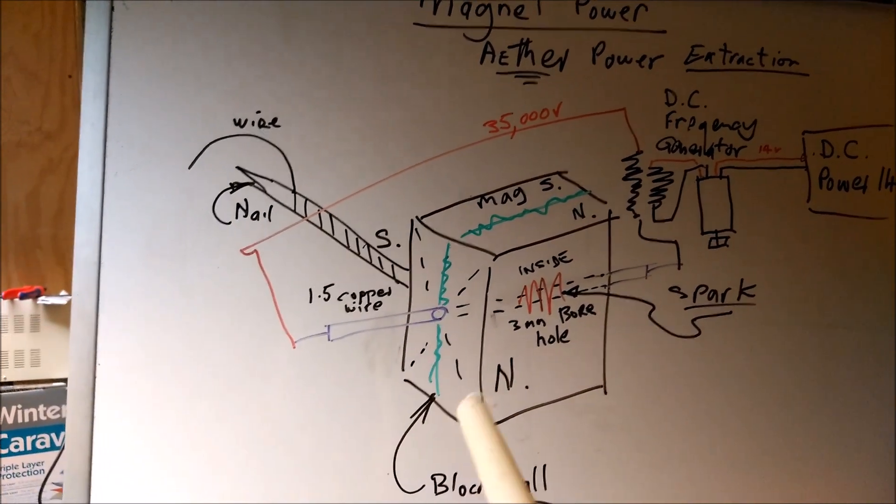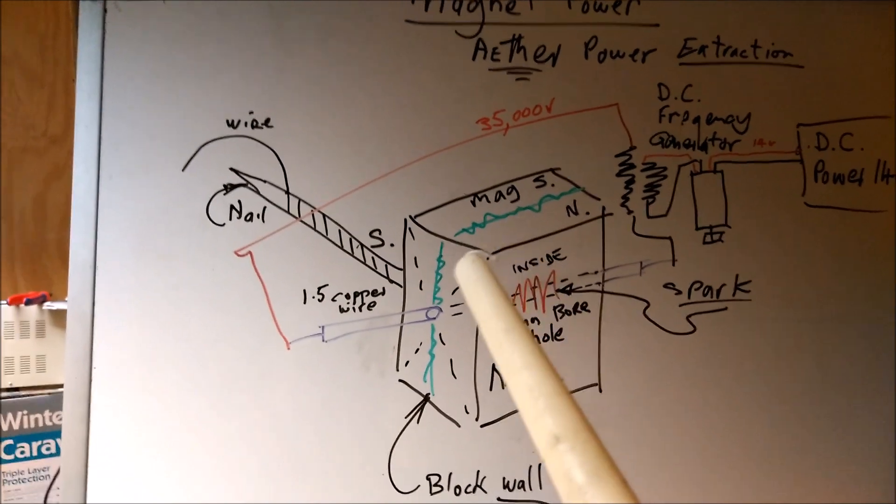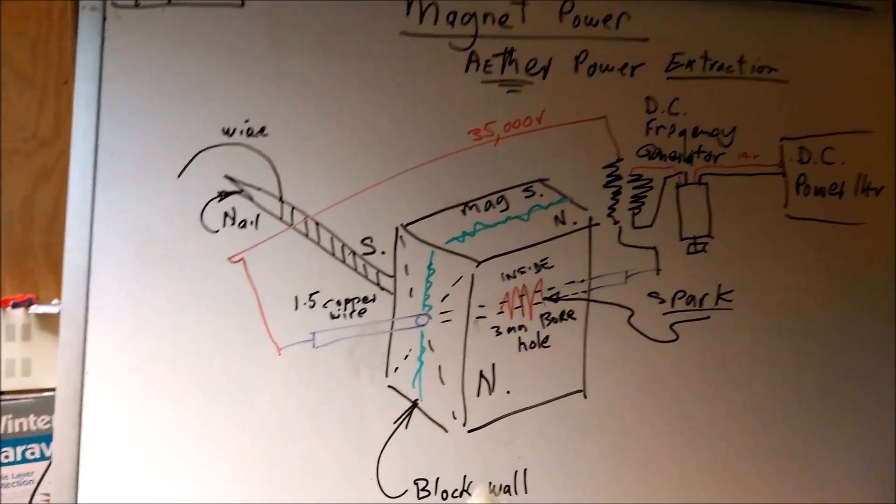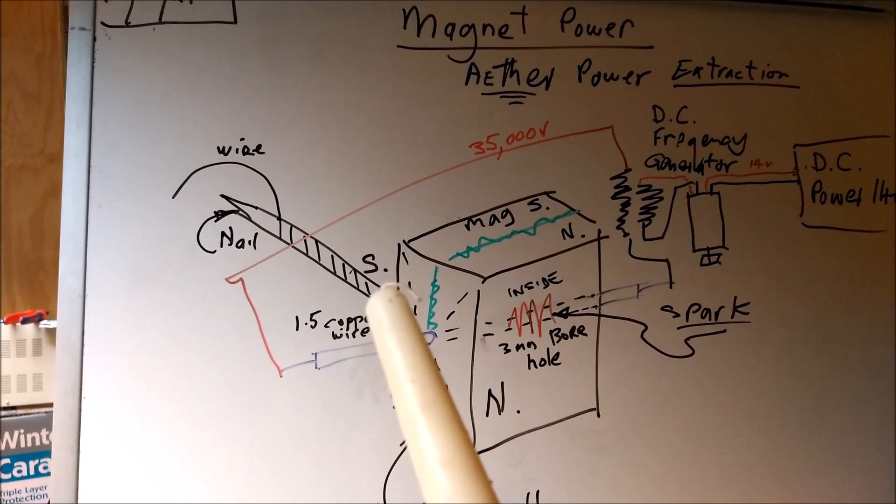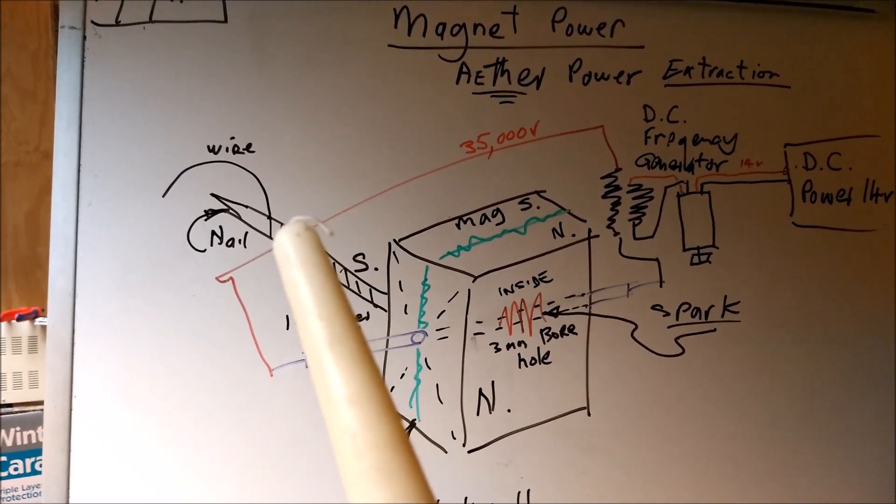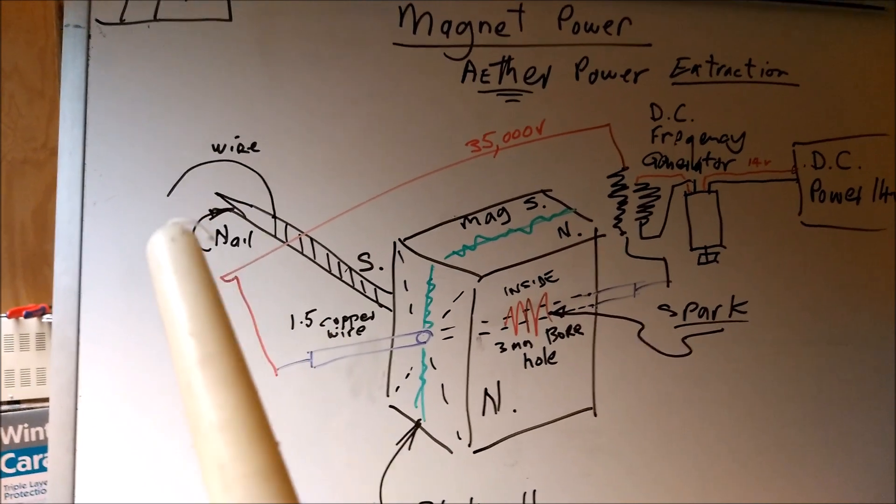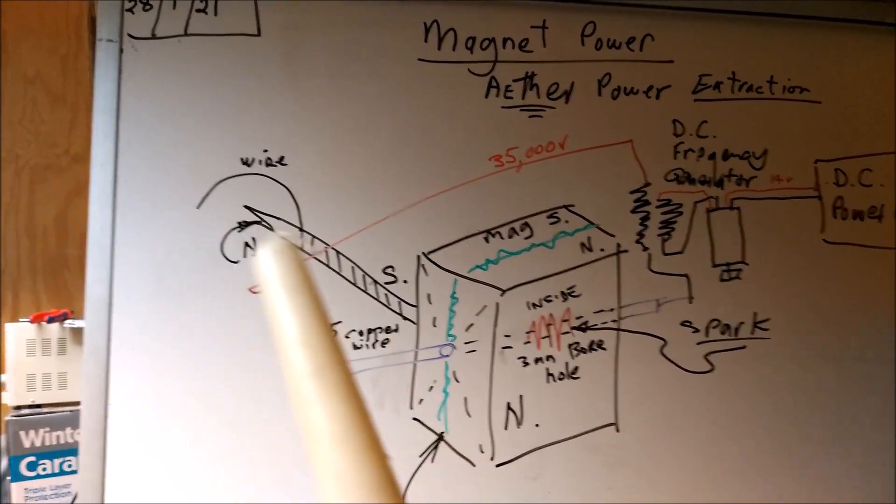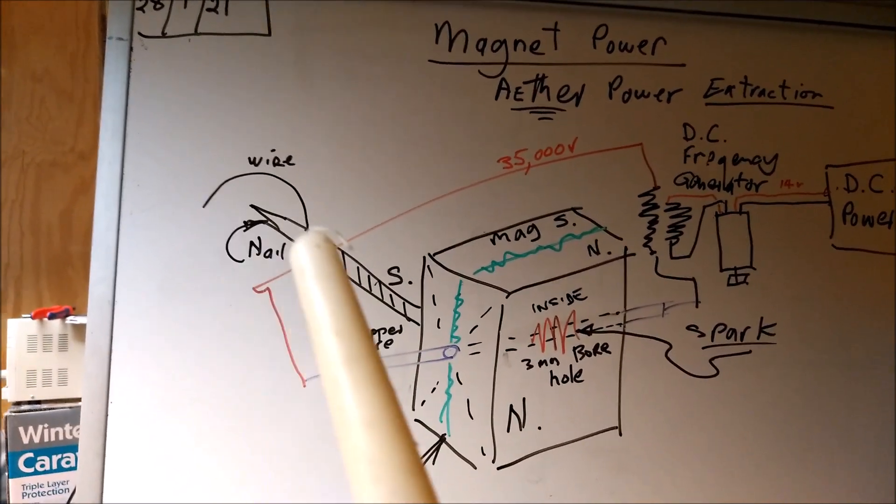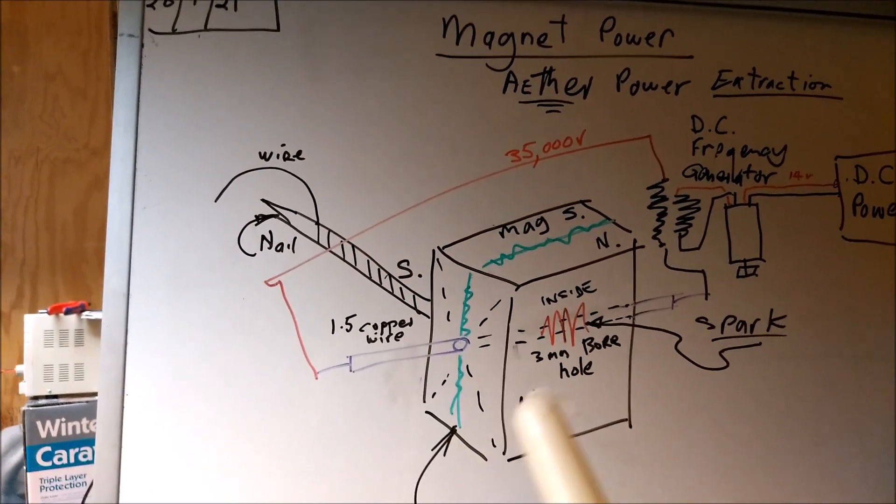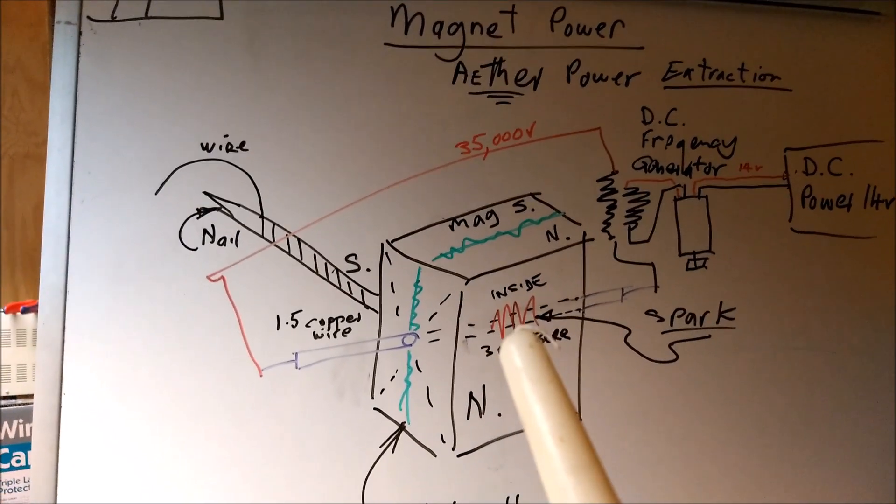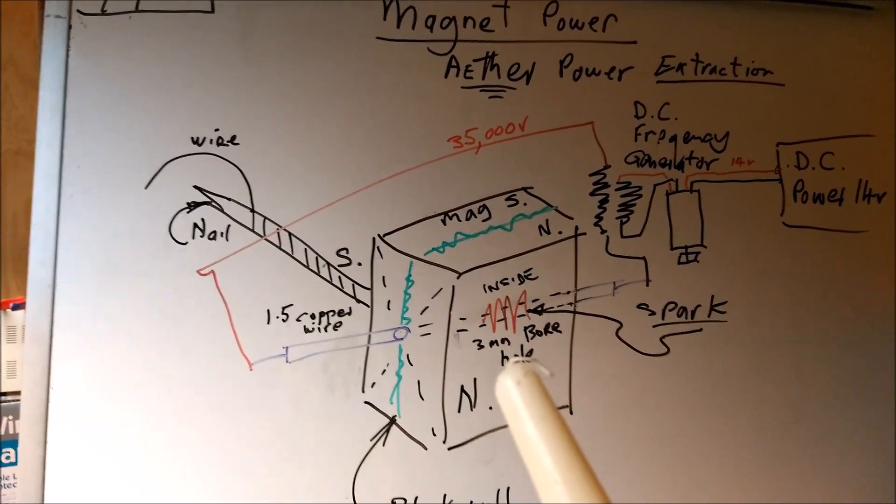The green line represents the Bloch wall, and we've got a nail here with some coiled annealed wire around it. That's where I'll be taking the reading from today, from any potential generated along that nail. The idea is we've got the magnet here, and in the center of the magnet we're pulsing with about 35,000 volts.